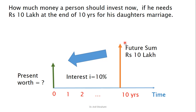There may also be a reverse situation — how much money a person should invest now if he needs Rs. 10 lakhs at the end of the 10th year for his daughter's marriage. He has estimated that after 10 years he may need approximately Rs. 10 lakhs. So he wants to keep an amount X in a bank fixed deposit at an interest rate of 10%, so that at the end of the 10th year he will get 10 lakhs. Whether it is Rs. 2 lakhs, Rs. 4 lakhs, or Rs. 5 lakhs — this can be calculated using the present worth method.